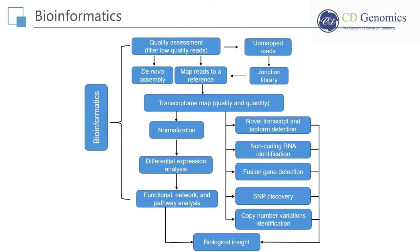Quality assessment is the first step for bioinformatics analysis of RNA-Seq, which ensures a coherent final result by removal of low-quality sequences, over-represented sequences, and adapter sequences. Once all reads have been filtered and mapped or assembled, gene expression levels can be inferred, leading to a genome-scale transcriptome map in terms of quality and quantity. RNA-Seq also allows detecting differential expression across treatments or conditions. Normalization has to be conducted to adjust the differences between samples, such as library size and gene-specific features.